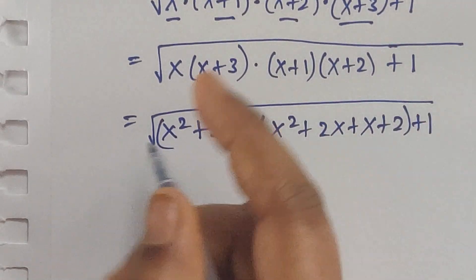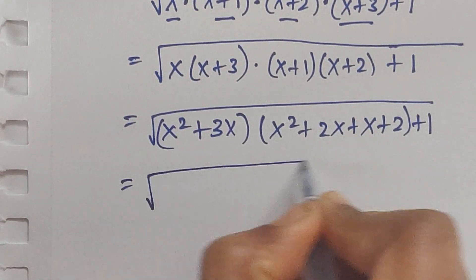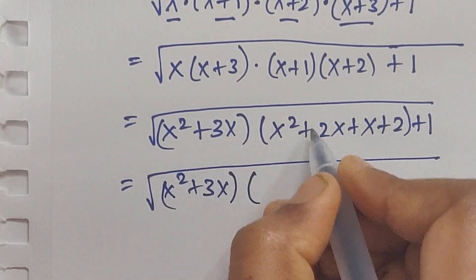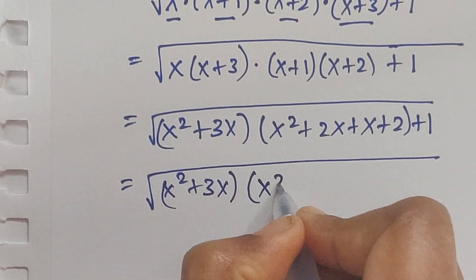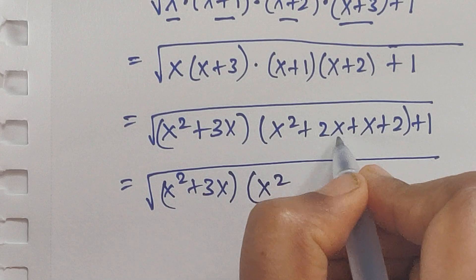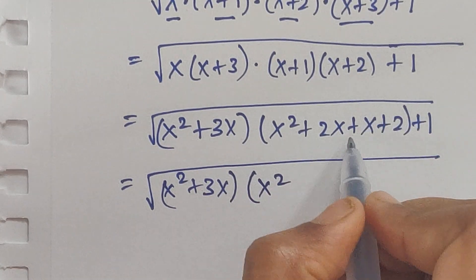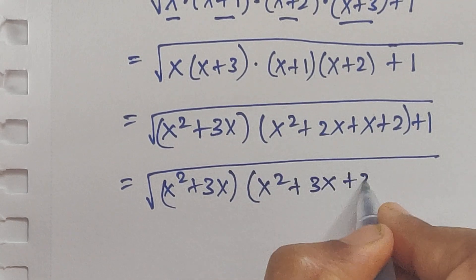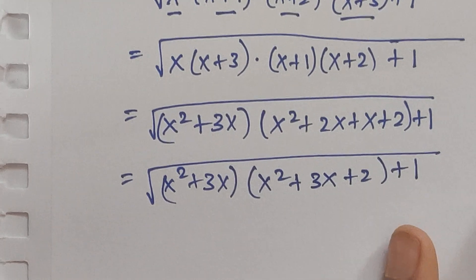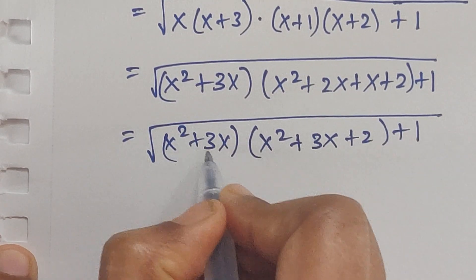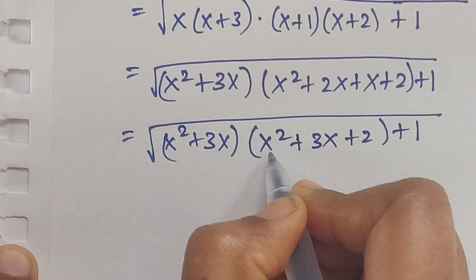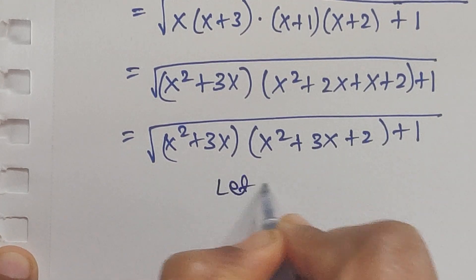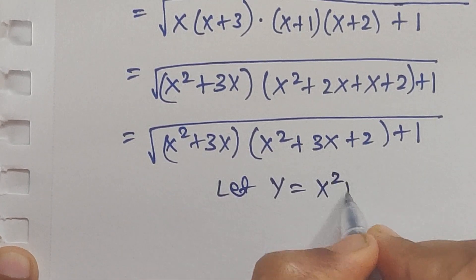So we get square root of (x² plus 3x) times (x² plus 3x plus 2) plus 1. We can see that x² plus 3x appears in both terms. Now let us consider y equal to x² plus 3x.